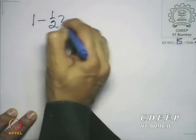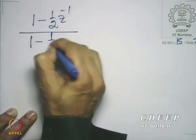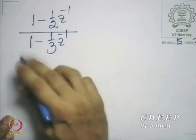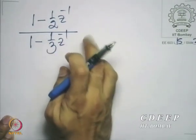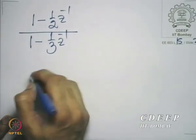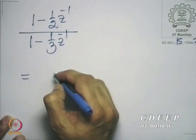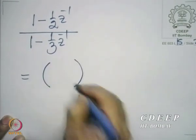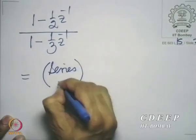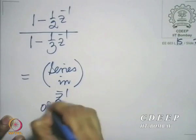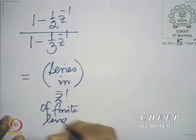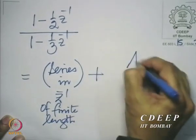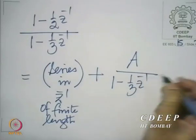Let me illustrate what I mean. Suppose you had the very simple case of (1 - ½z⁻¹) / (1 - ⅓z⁻¹). This is not in the standard partial fraction expansion form. In the partial fraction expansion form, it should be written as a polynomial or a finite-length series in Z or Z inverse, plus some constant divided by (1 - ⅓z⁻¹).